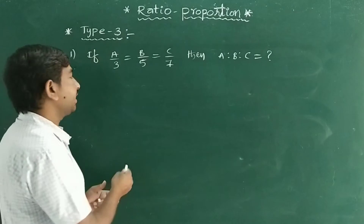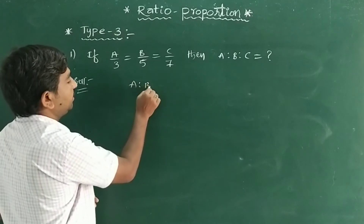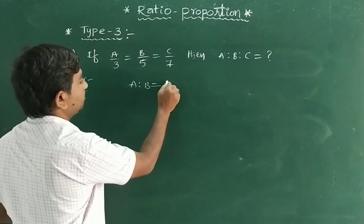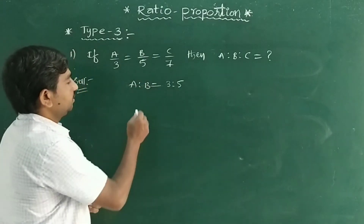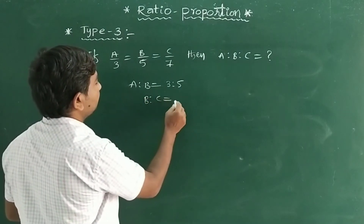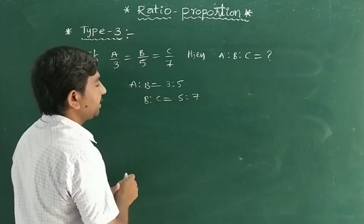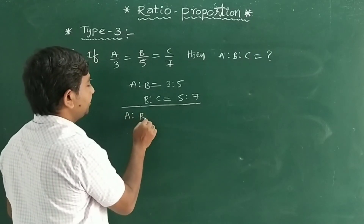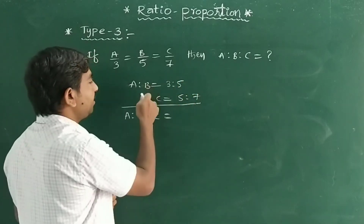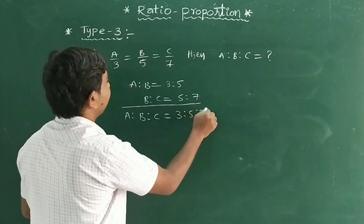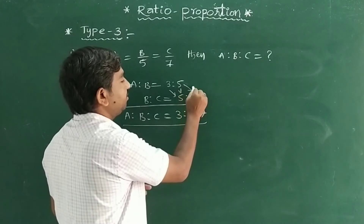In the general method, we derive A:B = 3:5 and B:C = 5:7. Since the B values are the same (5=5), we can write directly A:B:C = 3:5:7. If you multiply: 3×5=15, 5×5=25, 5×7=35, then cancel all terms by 5, you still get 3:5:7 — the same answer.